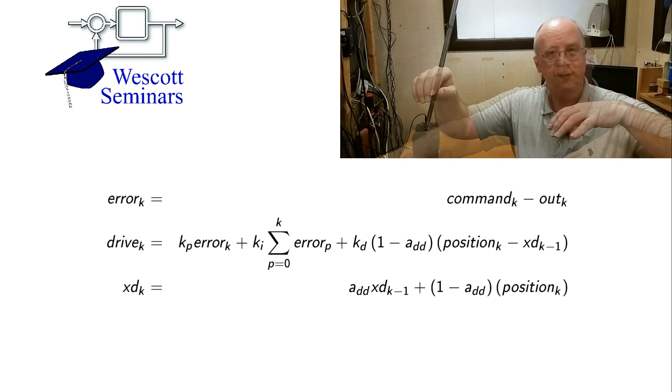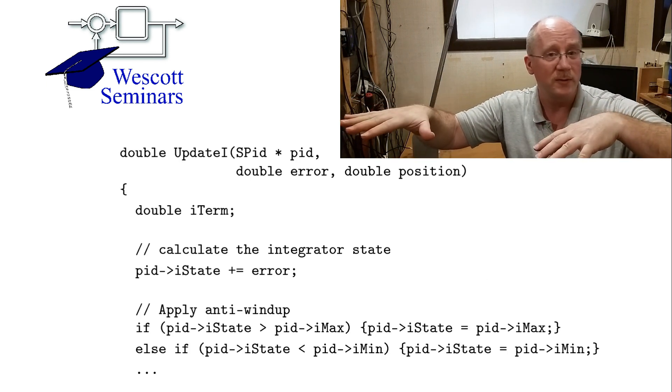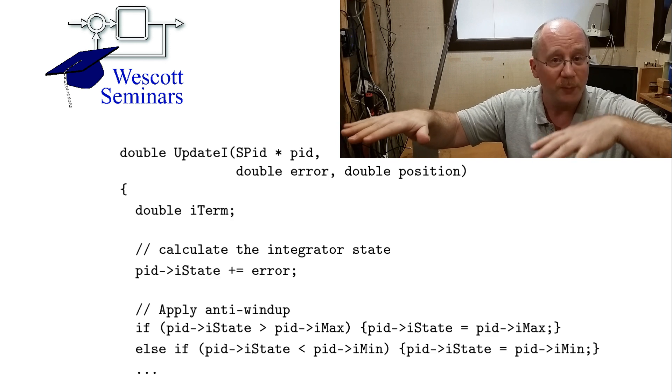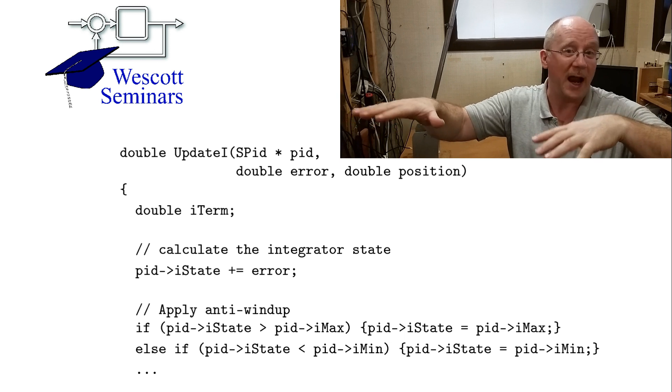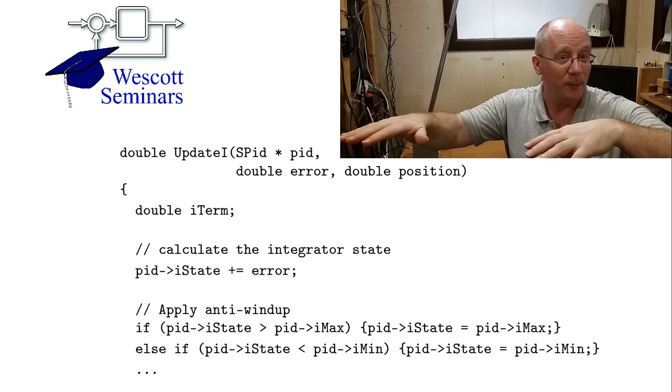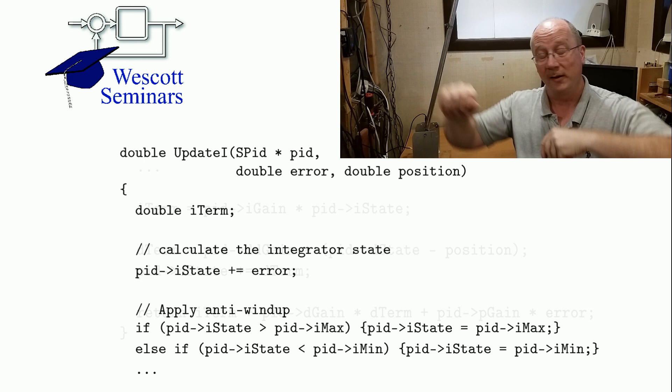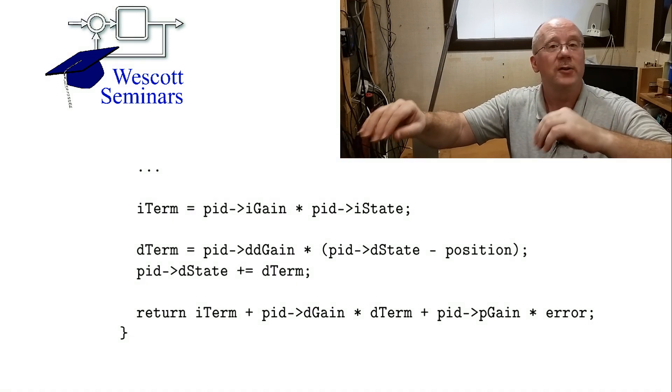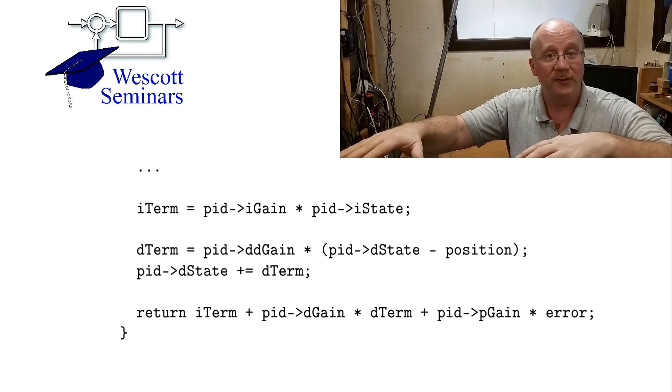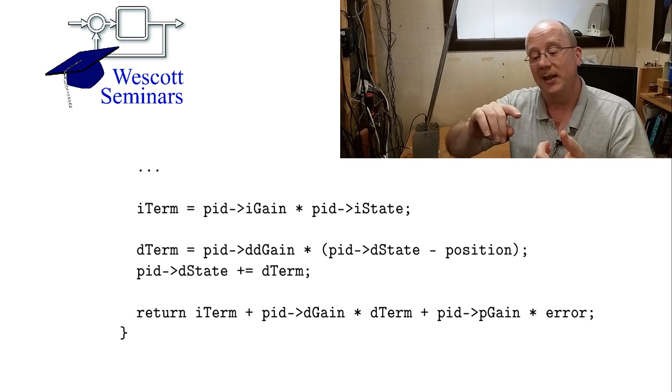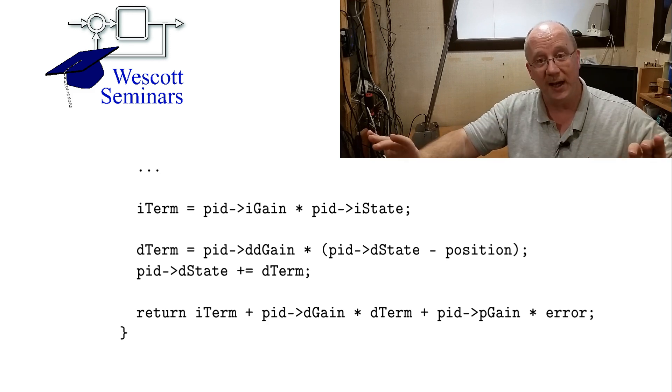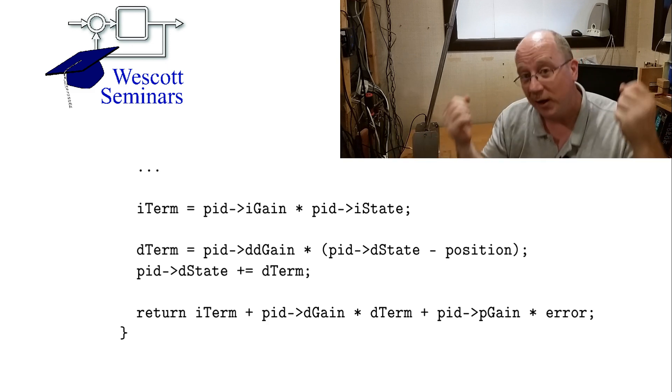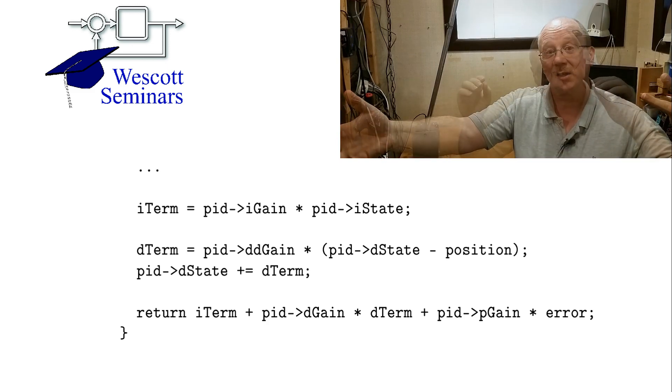And here's the code for implementing a full PID controller. Here again, the top part of this code is just showing you how to implement the integrator part. And then the bottom part of this code shows how I'm implementing the band-limited derivative and then I'm combining the integrator, proportional, and derivative into one answer. And that comes out and that's your PID controller.